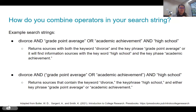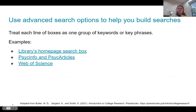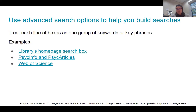It does get easier, and you don't necessarily need to know how to order everything manually, because a lot of advanced search options will help you build these searches. You treat each line of an advanced search screen as one grouping of keywords or key phrases. Let's take a look at some examples — we'll look at the library homepage search box, PsychINFO and PsychArticles, and Web of Science, to give you a sampling of different databases.